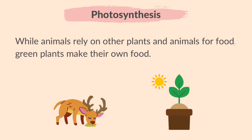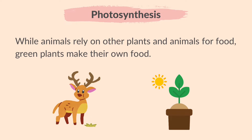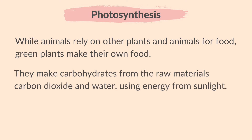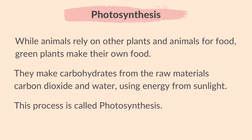While animals rely on other plants and animals for food, green plants make their own food. They make carbohydrates from the raw materials carbon dioxide and water using energy from sunlight. This process is called photosynthesis.